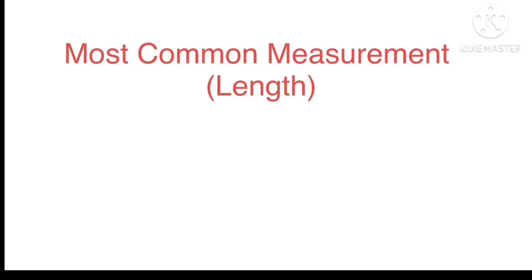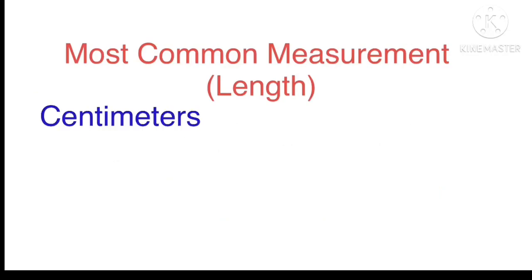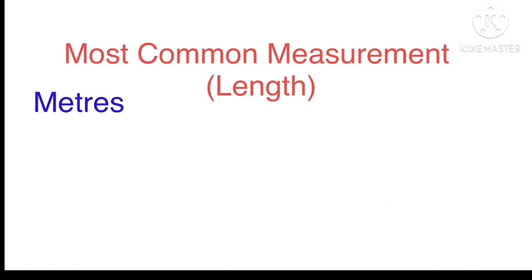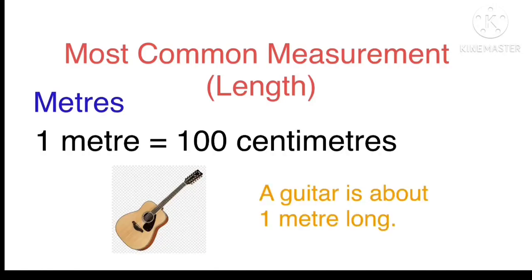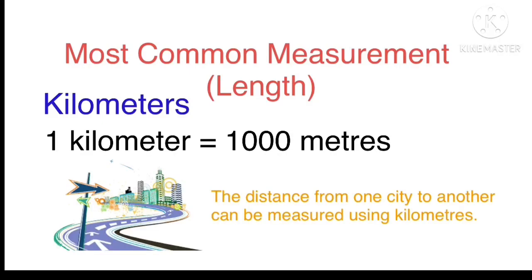Let's look at the most common measurements for measuring length. Millimetres are the shortest units of length. It is about the thickness of a plastic credit card. Centimetres - a centimetre is 10 millimetres. A fingernail is about 1 centimetre wide. Metres - one metre is 100 centimetres. A guitar is about 1 metre long. Kilometres - the distance from one city to another city can be measured using kilometres.